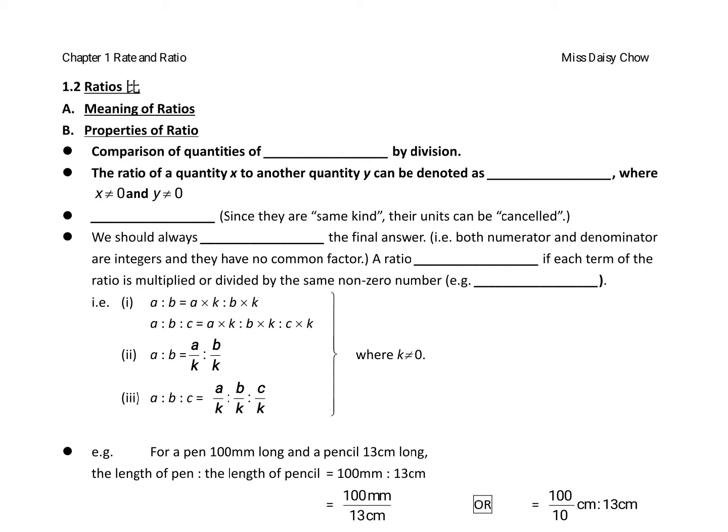So you will find that rate has units. You should guess what ratio is - ratio is same kind by division. Two quantities describing the same thing are divided. The notation can be written as x to y using a colon, or x over y.